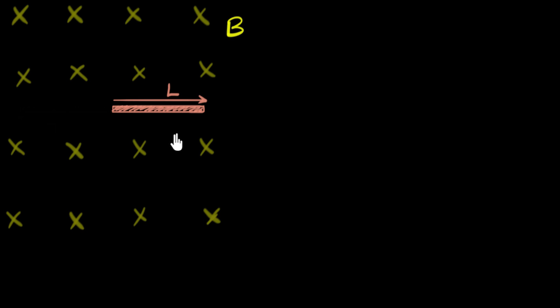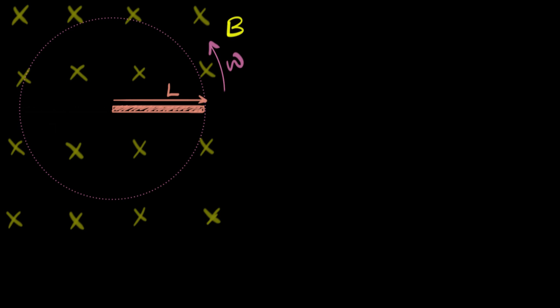Now you may be wondering why are we spinning a rod in a magnetic field? Well, that's what physics is all about — we come up with some unrealistic situations to help you strengthen your concepts. The rod is spinning with some angular speed omega. The immediate question is: why would there be a potential difference induced? This is something we've talked about in previous videos called Motional EMF.